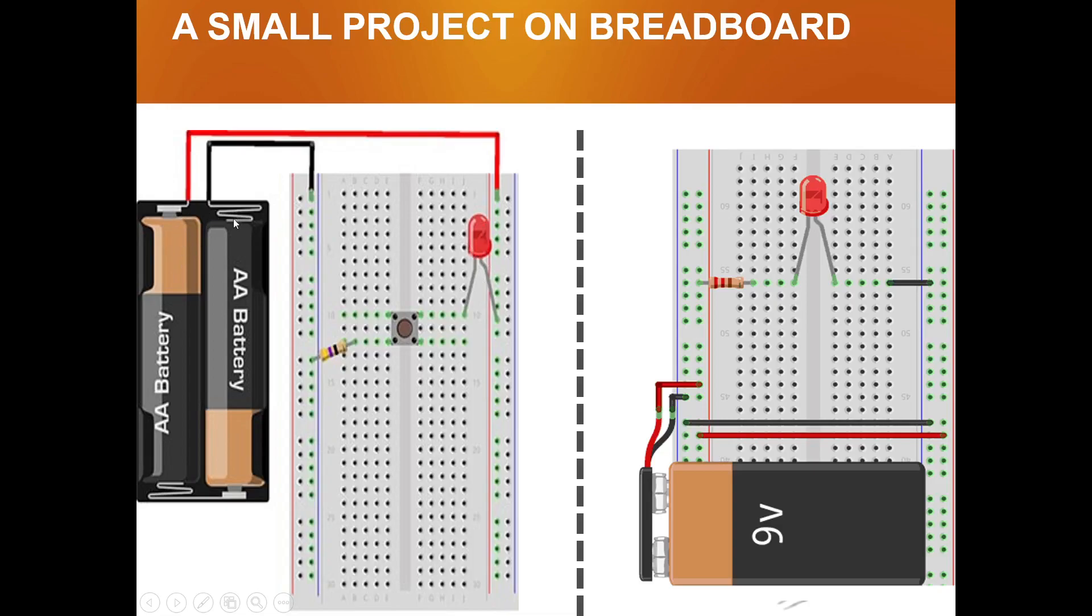For any component, always remember we'll need at least these many things for our basic project: at least three things, one LED, one switch, and one resistor, and definitely one battery that will be a power source to connect. So we have two things, one is positive and one is negative.